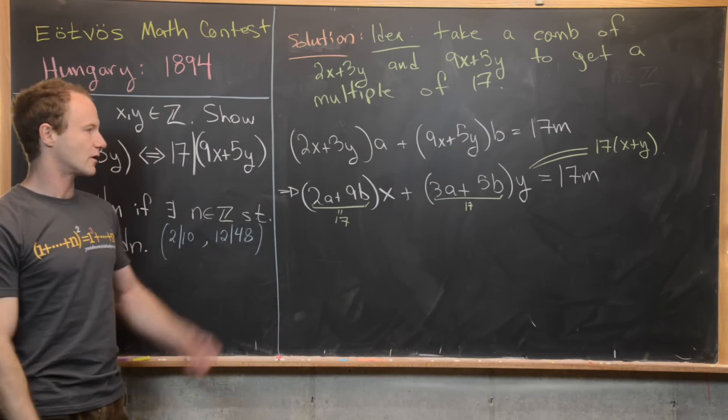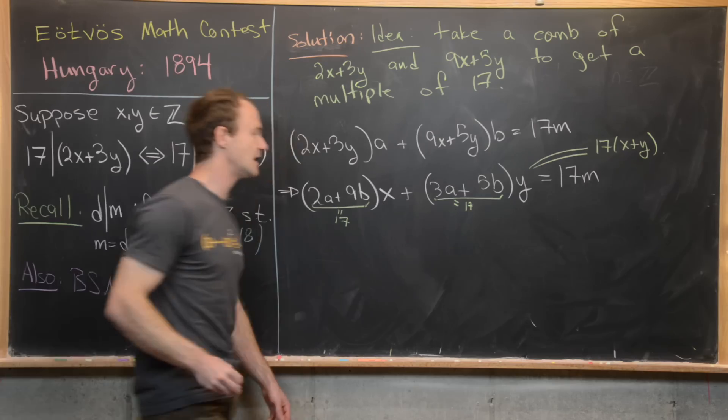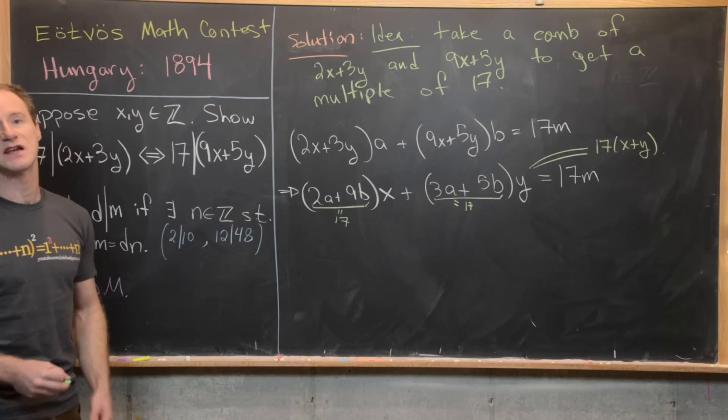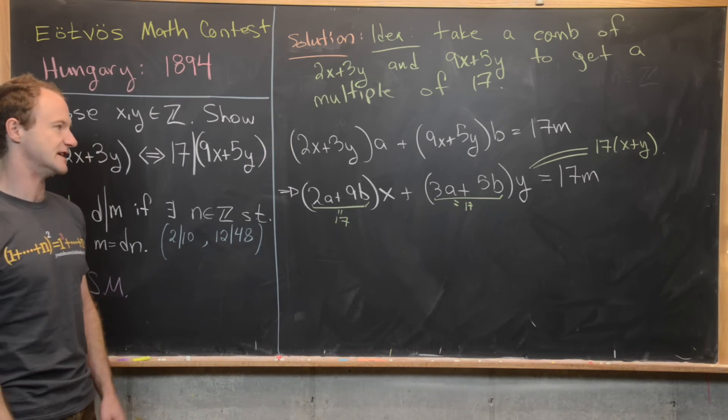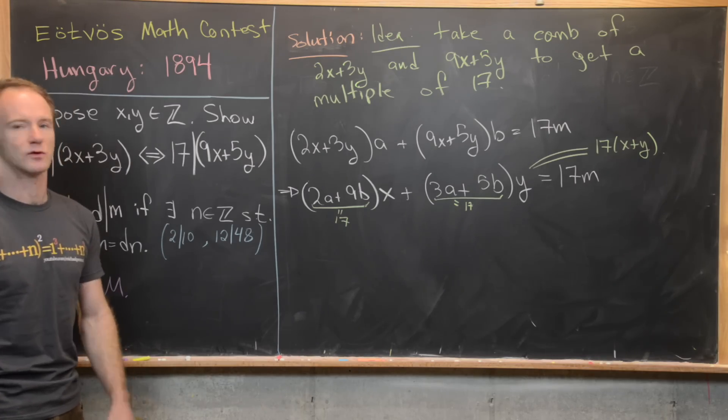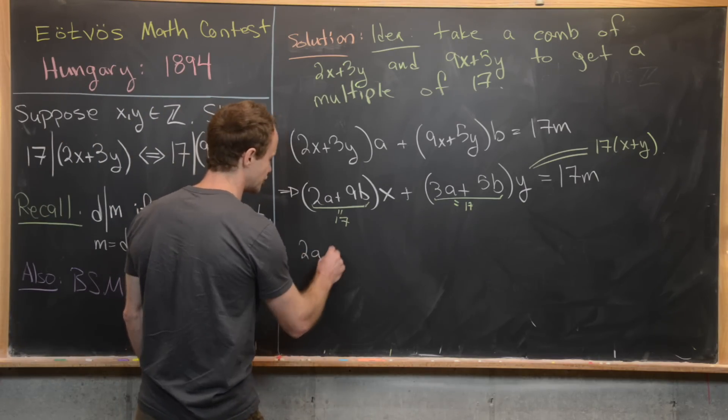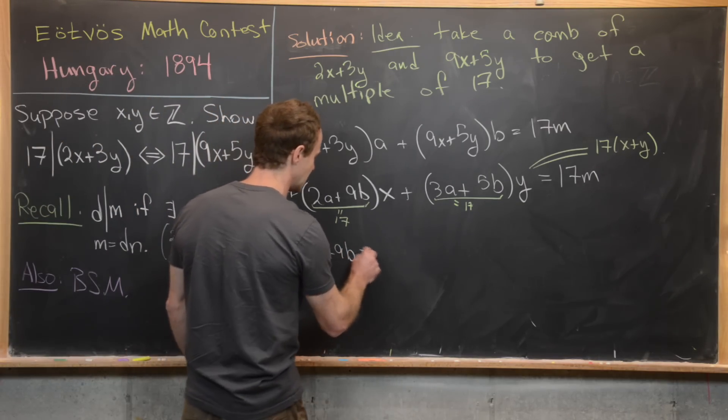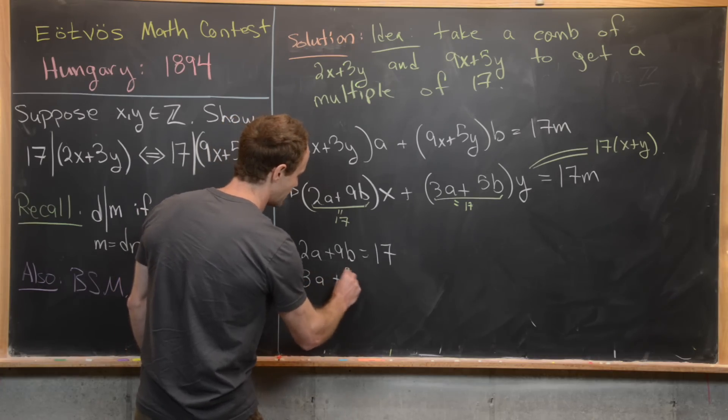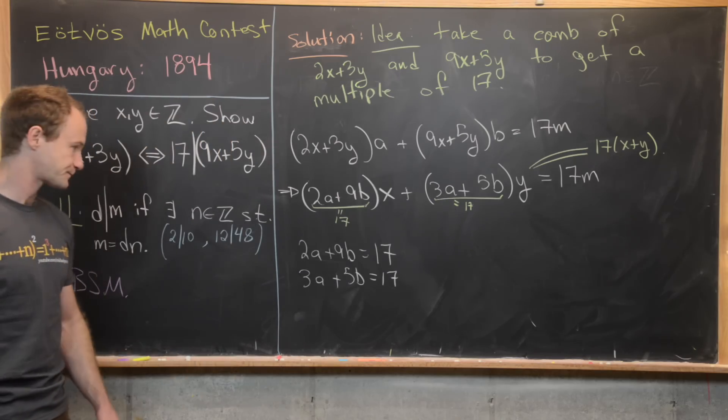Now, a priori, we don't know that it's possible to make each of these equal to 17. But at least thinking in this direction gives us a system of equations that we can maybe solve to see if it is possible. And look, we're solving it over the integers here. So that's important to notice as well. So in other words, we want to solve the system of equations 2a plus 9b equals 17. And 3a plus 5b equals 17.